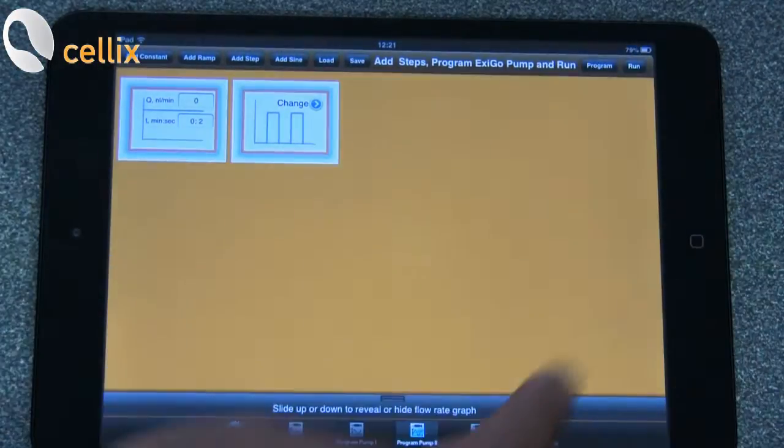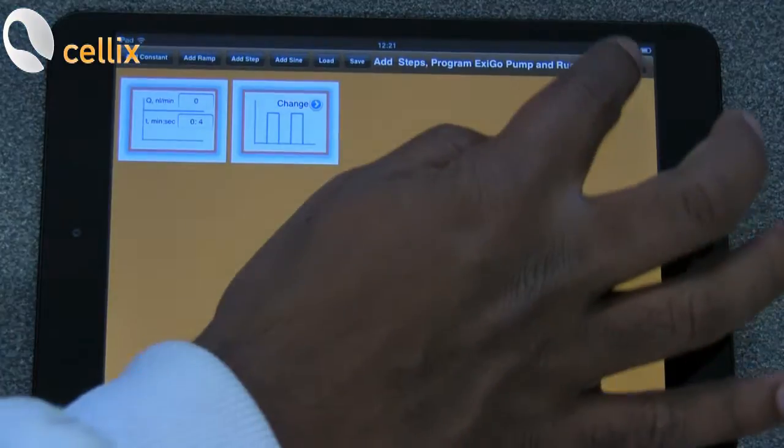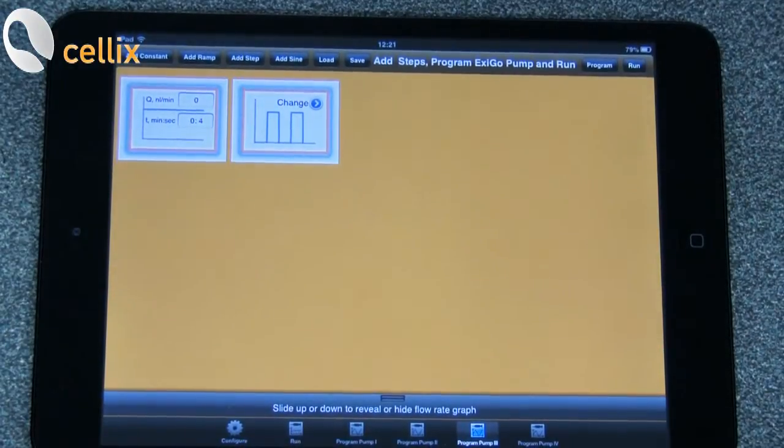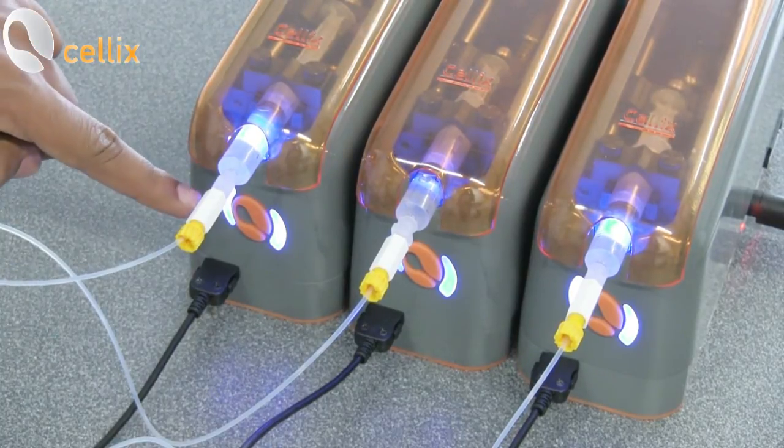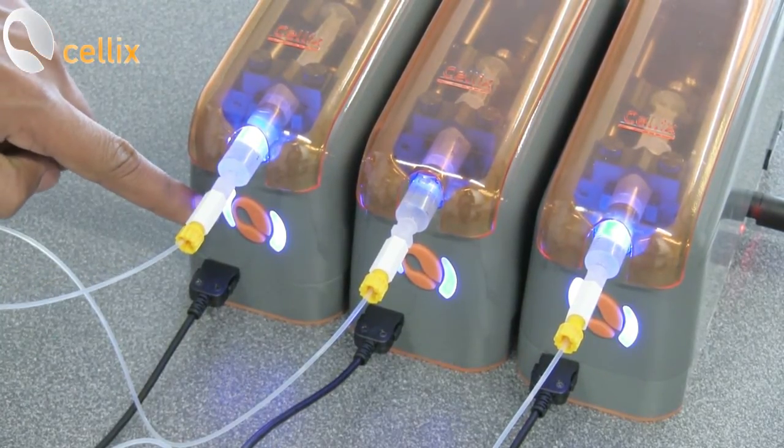The same with pump 2, same with pump 3. Once you have programmed the pump, you can see the color of the light changes from green to blue.